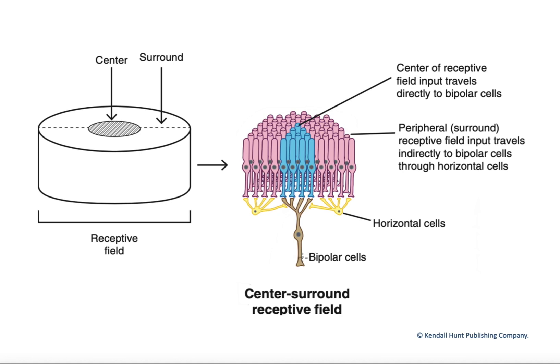What we find is that not all these rods send information equally to that bipolar cell. In other words, we end up with a center-surround arrangement within this receptive field.